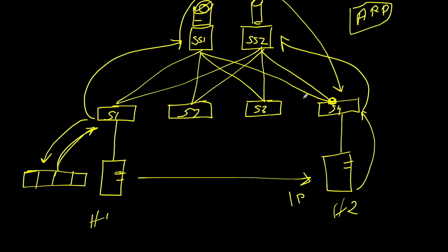So this is how ARP requests are handled by the ACI infrastructure. If ARP flooding is enabled, it broadcasts within the broadcast domain as in a traditional network. If disabled, it goes to the spine proxy — the leaf switch says 'don't broadcast, let the spine take care of it.' This is how ARP requests are handled by the ACI infrastructure.